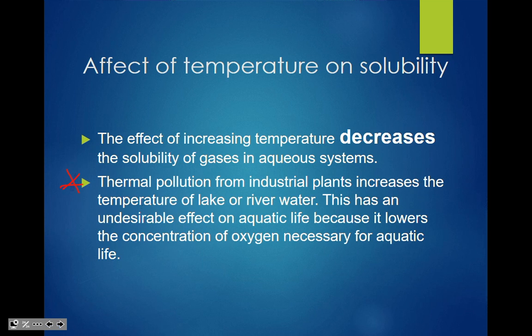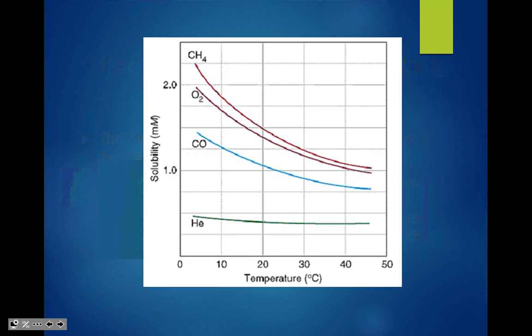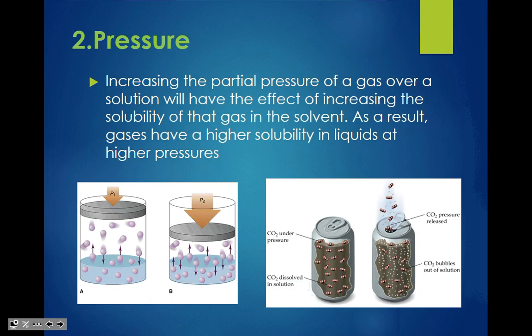Thermal pollution is a real-world example: industrial plants that increase the temperature of a lake or river have an undesirable effect on aquatic life because it lowers the concentration of dissolved oxygen necessary for aquatic life — there's simply less dissolved oxygen in warm water. The second factor is pressure: increasing the partial pressure of a gas over a solution increases the solubility of that gas. That's what happens with a can — when you open it, the pressure is released and the gases escape because they're less soluble at lower pressure.